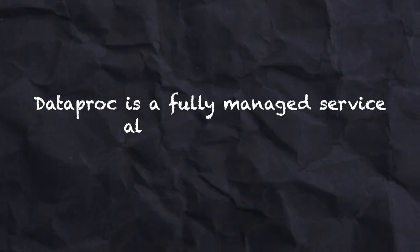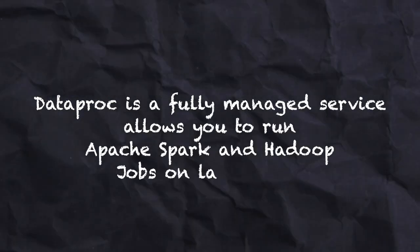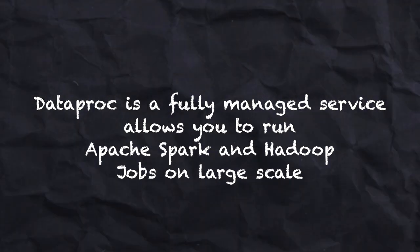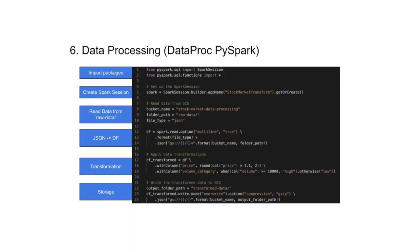Dataproc is a fully managed service provided by Google that allows you to run Apache Spark and Apache Hadoop jobs at large scale. As per our client requirement, we want to process data at large scale because our data volume is quite huge, and Dataproc will help with this. We will use Apache Spark provided by Dataproc, which is a fully managed service, so you don't have to worry about installation or any other setup — everything will be taken care of by Google. You just need to focus on writing your code and making sure your logic is correct. Once you transform your data, you can store it onto another location such as Google Cloud Storage again, or load it into a data warehouse.